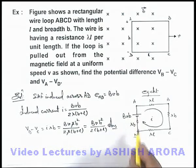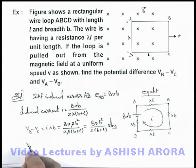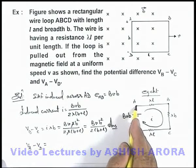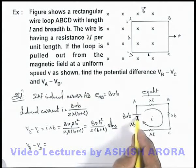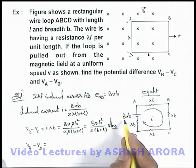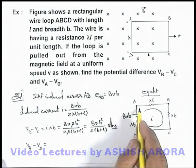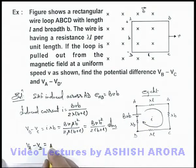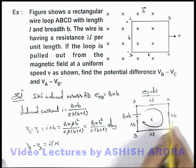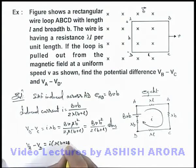The potential difference across AD can be written as the potential difference across terminals of the induced EMF, which is Bvb minus iλb, or the potential difference across these three resistances, which is i times λ(b + 2l).